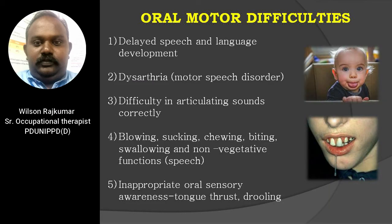Oromotor difficulties faced by children with cerebral palsy include: delayed speech and language development; dysarthria, also called motor speech disorder, due to poor muscle tone and lack of coordination of facial, neck, and throat muscles; difficulty in articulating sounds correctly due to weakness or spasticity; difficulty in blowing, sucking, chewing, biting, swallowing, and non-vegetative functions like speech; and inappropriate oral sensory awareness leading to tongue thrust and drooling.